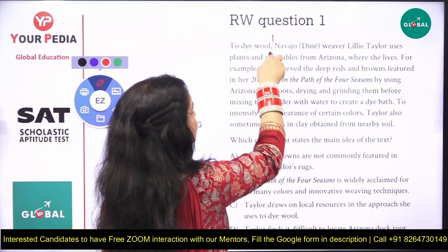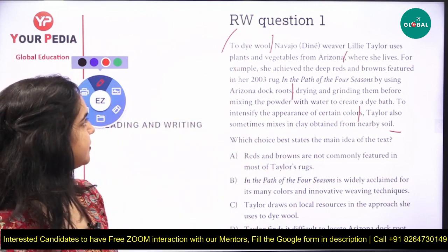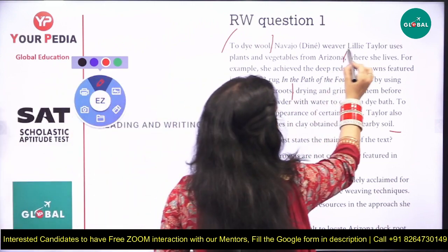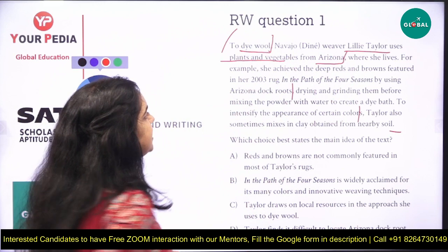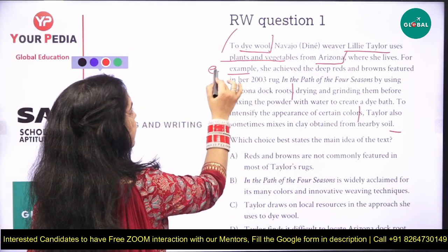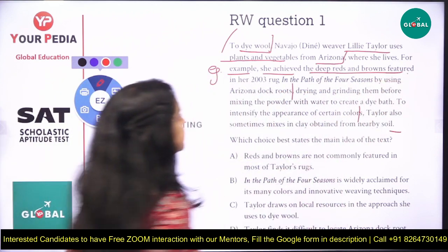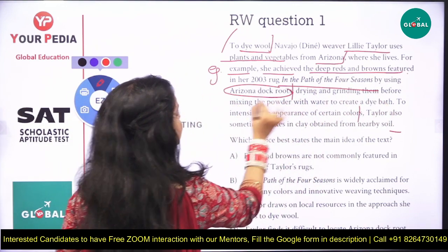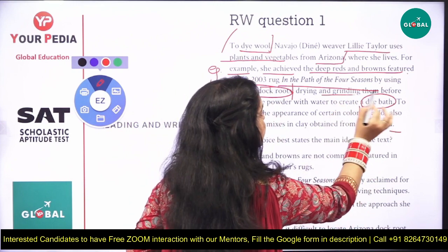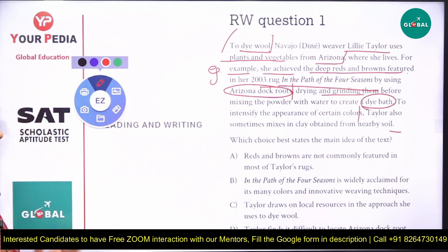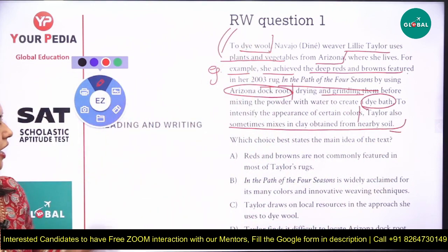When reading a comprehension passage, remember to pause at punctuation marks. We'll solve this using the elimination method. The passage is about dyeing wool. A weaver named Lily Taylor uses plants and vegetables from Arizona, where she lives. She achieved deep reds and browns in her 2003 rug 'Path of Four Seasons' by using Arizona dock roots — drying and grinding them before mixing the powder with water to create a dye bath.